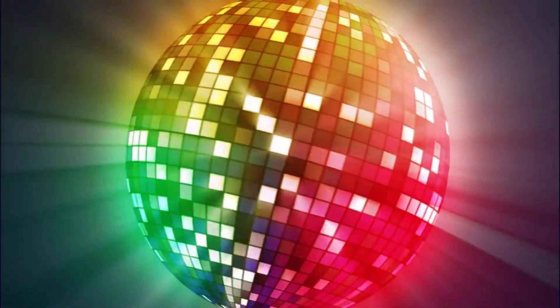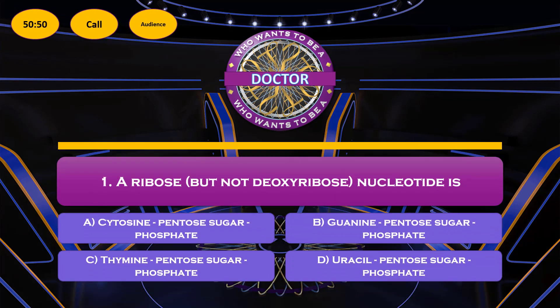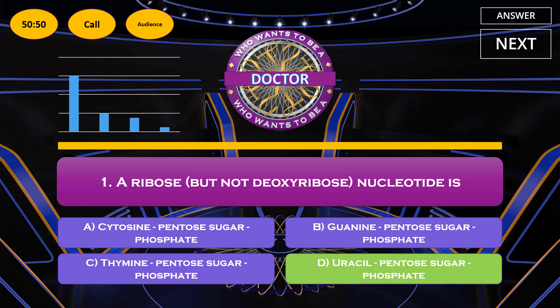Let's kick off today's session with our first question. Take your time and think it through. The first question: which is a ribose but not deoxyribose nucleotide? Option A: cytosine, pentose sugar, phosphate. Option B: guanine, pentose sugar, phosphate. Option C: thymine, pentose sugar, phosphate. Option D: uracil, pentose sugar, phosphate. The answer is uracil, pentose sugar and phosphate. Ribonucleotides are components of RNA, while deoxyribonucleotides are components of DNA. RNA usually contains uracil instead of thymine, which is found in DNA. So uracil-pentose sugar-phosphate is the ribonucleotide among all the options.